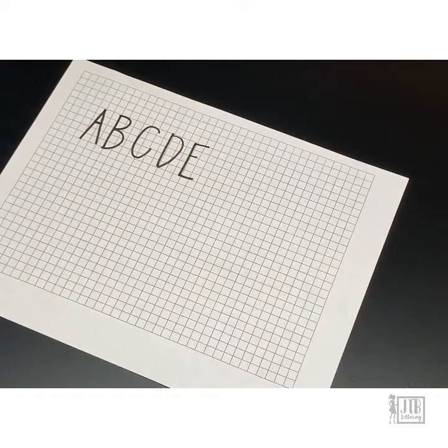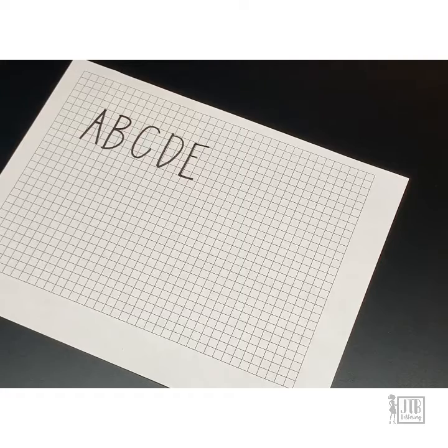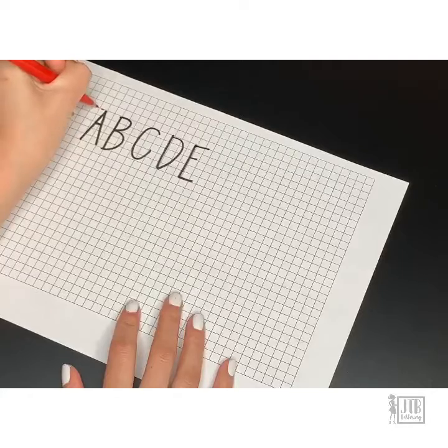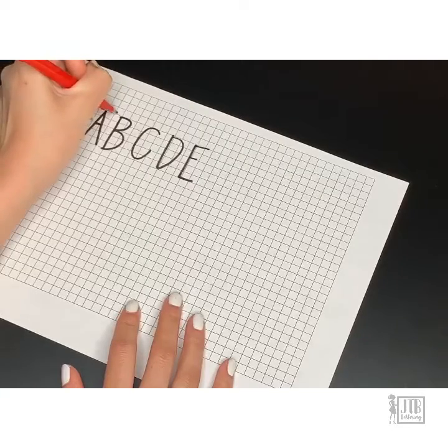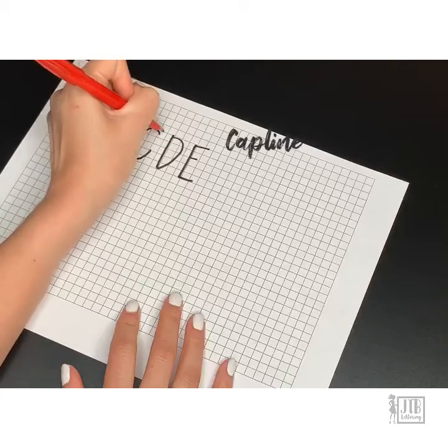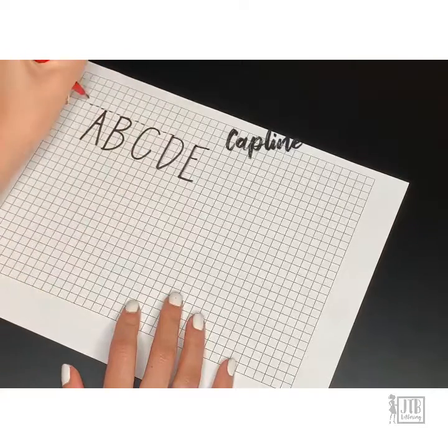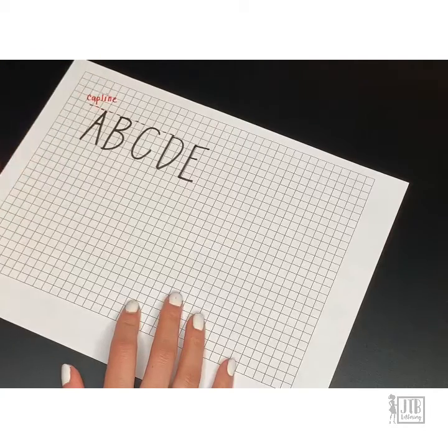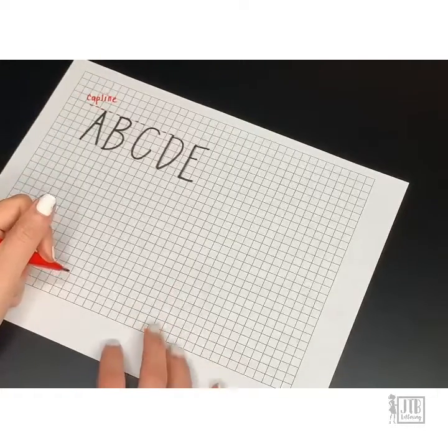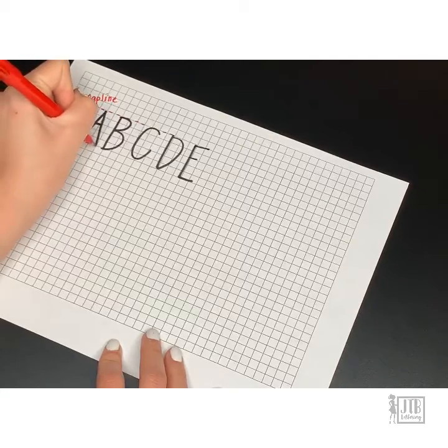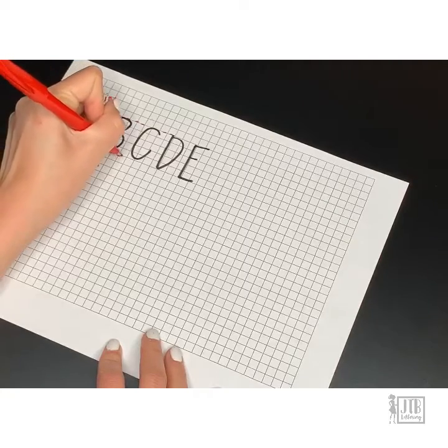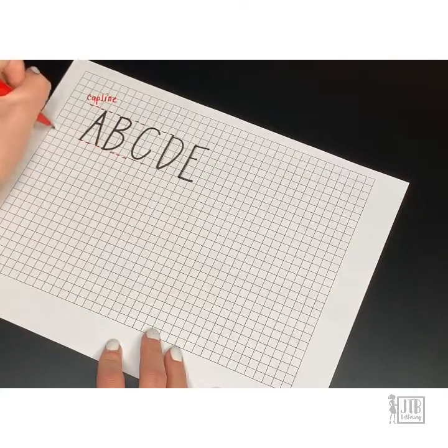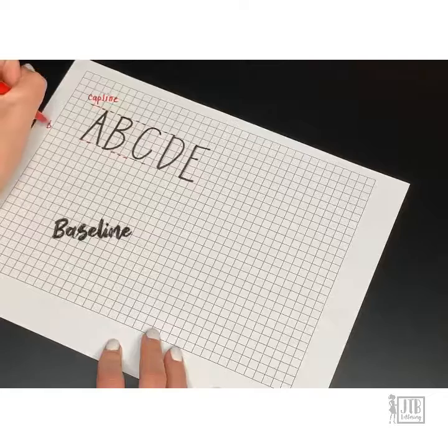I'm going to use my red pen to kind of highlight some specific areas of the letters. So this first line right here that I'm about to draw, that's what we call the cap line. That's the top of the letter or the height of the letter in this case. And the bottom or the base of the letter is called the baseline. So every letter that I write is going to be within the baseline or the cap line.